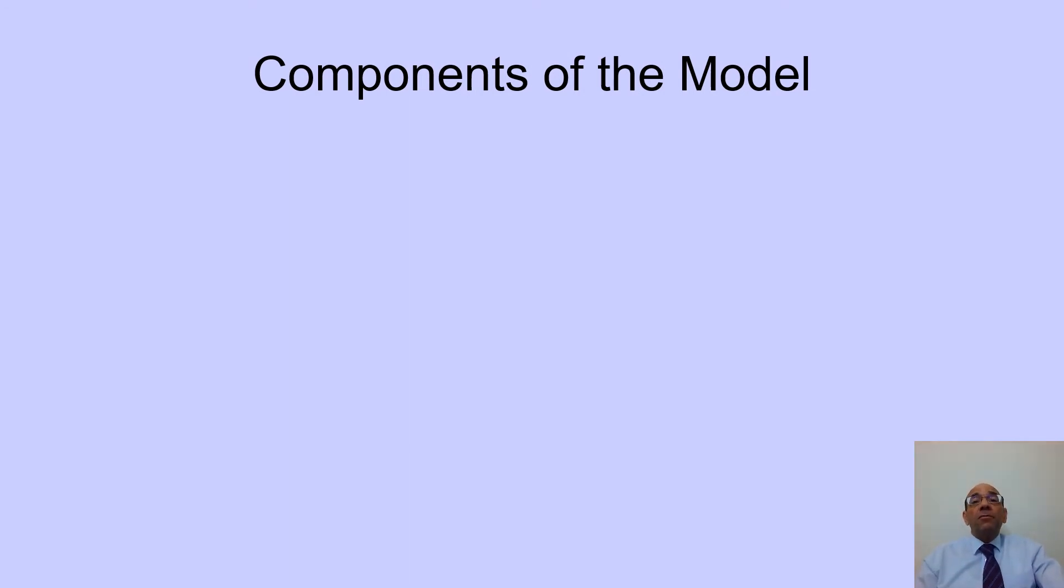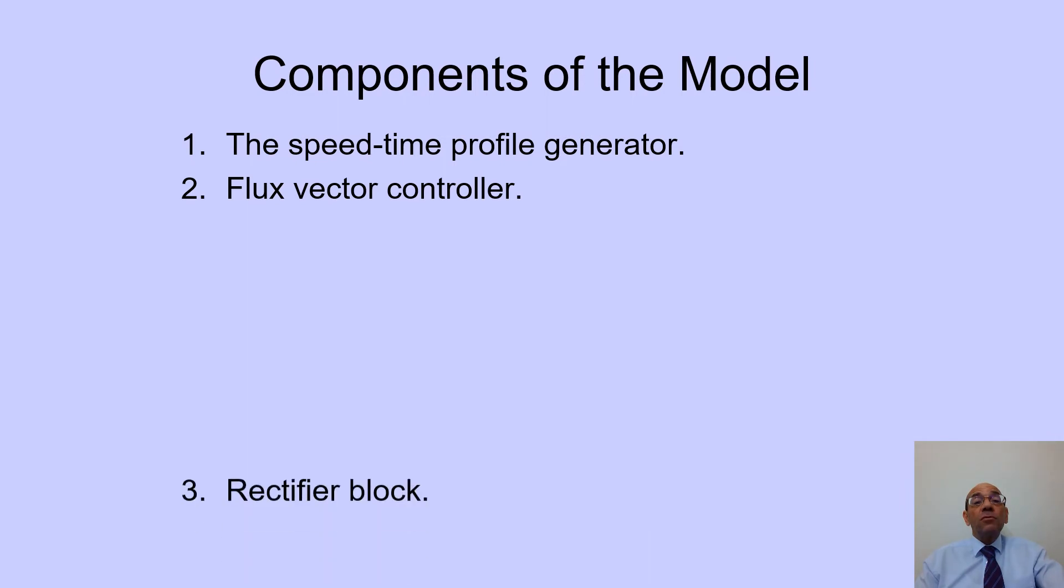There are, in fact, eight main components of this model. The first one is the speed time profile generator and in there would be stored things like the rated speed, the rated acceleration, the rated jerk and the required distance of that journey. And it would actually produce speed against time that will be used in the control of the speed of the elevator. The flux vector controller is important because it's actually controlling the amount of magnetic flux inside the motor and it's actually achieving the closed loop speed control. The rectifier block, which converts the incoming AC power supply to DC and then the inverter block, the insulated gate bipolar transistor, which then converts the DC into AC, but at variable frequency based on the pulses that are received from the flux vector controller.